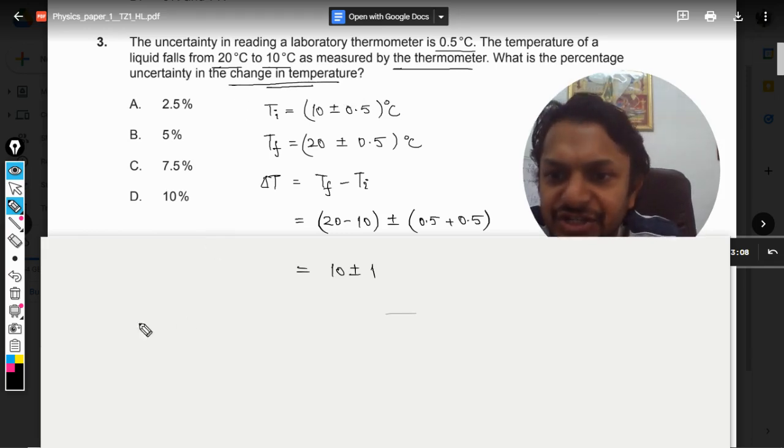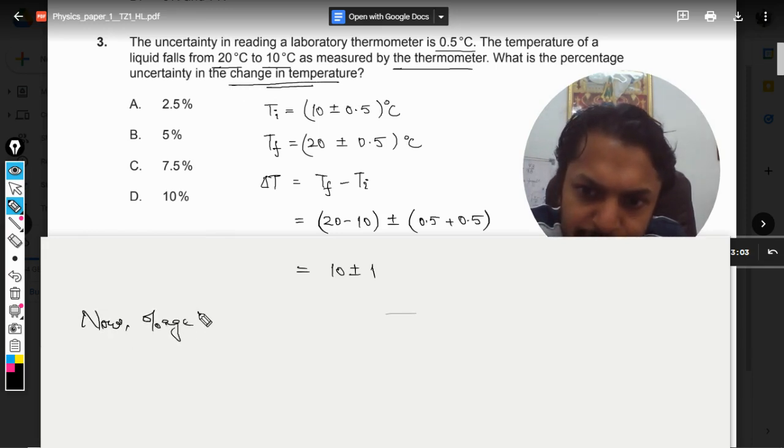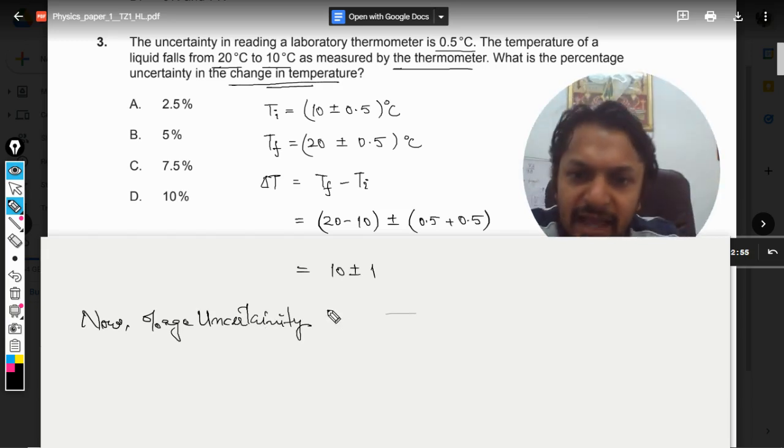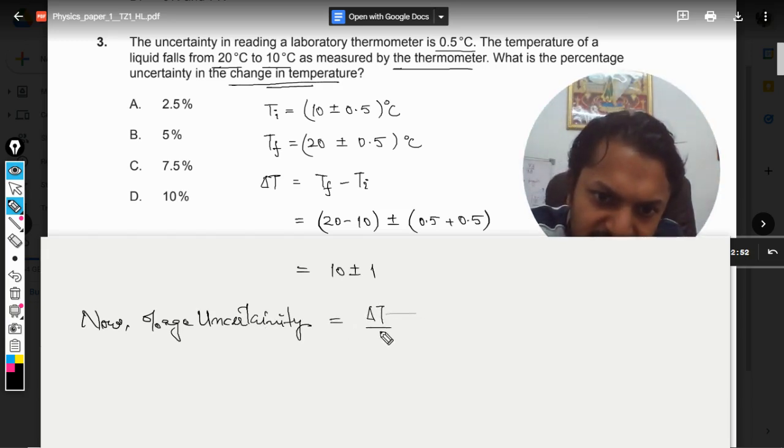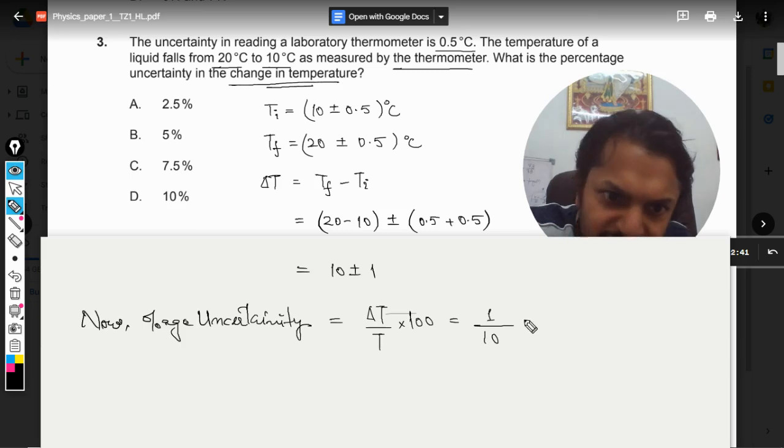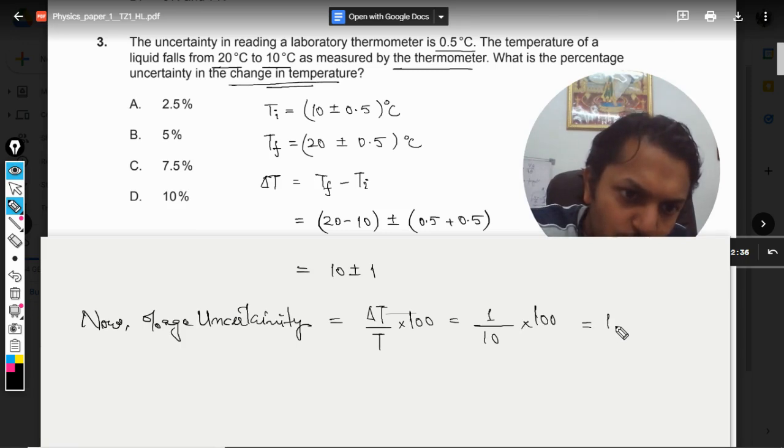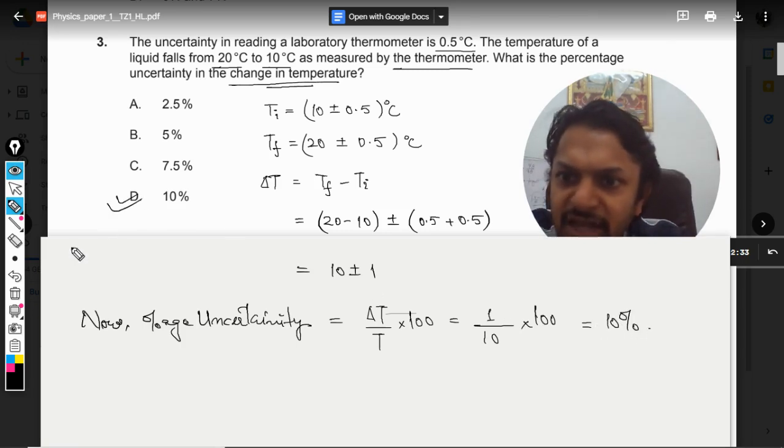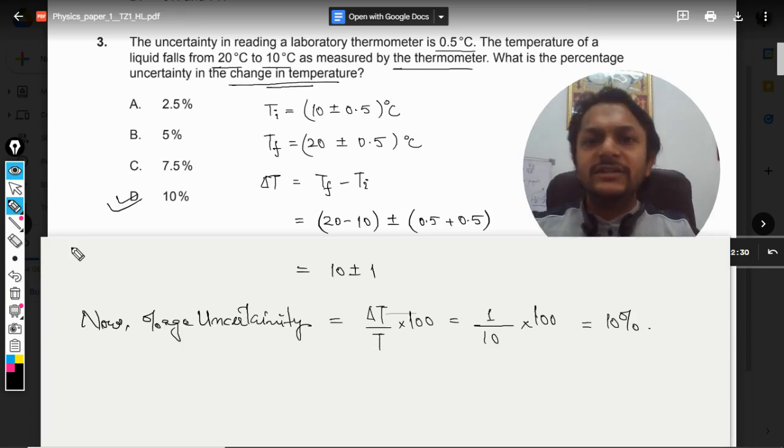So now we need to find the percentage uncertainty in the change in temperature. How is the percentage error found? Percentage uncertainty will be delta T by T into 100. So the absolute error in the reading of the temperature, in the change in temperature, will be taken as 1. This will be taken as 10, and we will multiply it with 100, so it will become 10 percent. So with this, my dear students, it comes out that D is the correct option for this question.